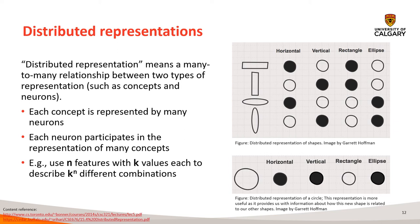The inefficiencies of localist representation are addressed by distributed representations, where there is a many-to-many relationship between concepts and neurons. Each concept is represented by many neurons and each neuron participates in the representation of many concepts. With distributed representation, we can tell how a particular shape relates to any other shape, like horizontal rectangle and vertical rectangle. An additional input like circle can be accommodated by yet another combination of neurons. An added benefit is compactness: for n binary features, we can describe 2 to the power of n different combinations.